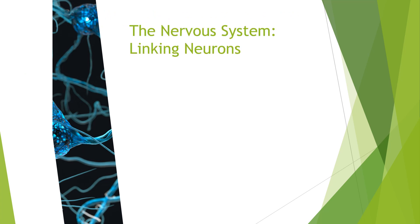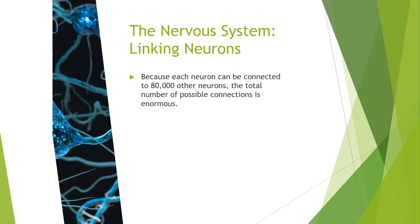Let's start out talking about the nervous system and the neurons — how they are linked within the nervous system. Each neuron in your body can be connected to 80,000 other neurons. That just goes to show you how many neuron cells we have in our body. The total number of possible connections is enormous. When you think about 80,000 connections, and those neurons connecting to other neurons and those connecting to still more, you can see how the possible connections is just enormous.